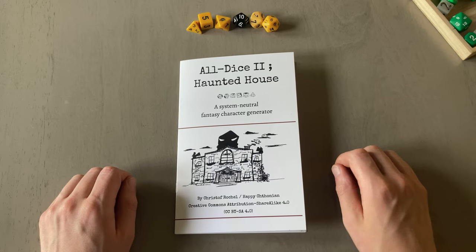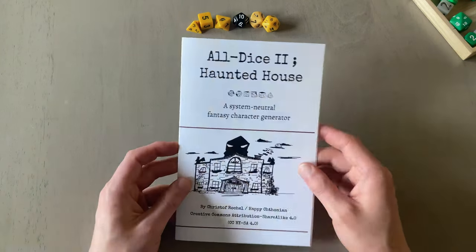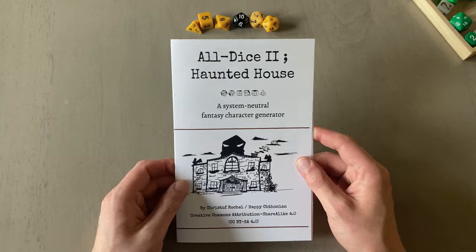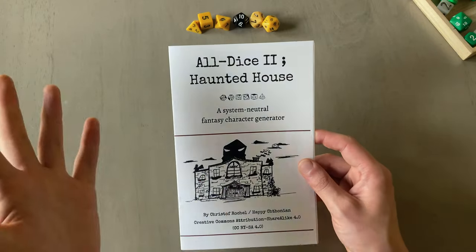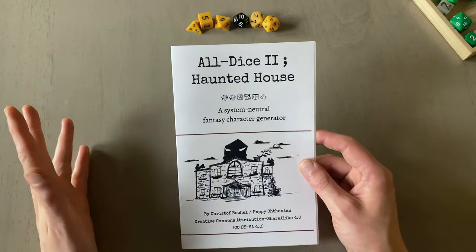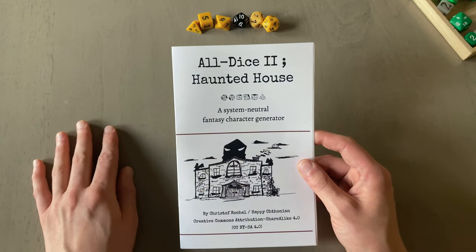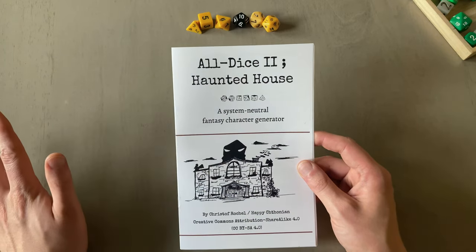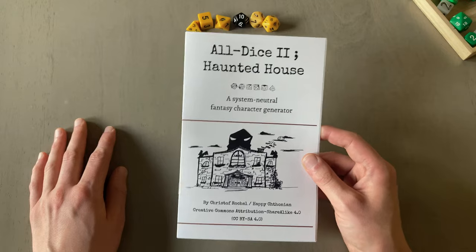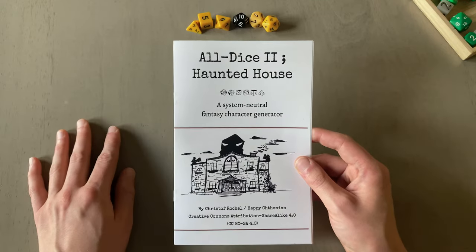All Dice 2, Haunted House System Neutral Character Generator. It gives a character that's kind of a class and background and then a whole bunch of gear. If you want to add stats to it, you can. You could just run it with Adventure Hour or another no stats, low stats game. But the stuff it gives you is usable in any system that you might want to use and it's a good foundation for a character.